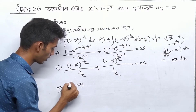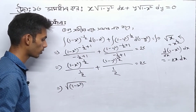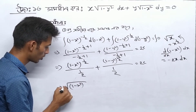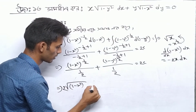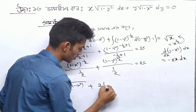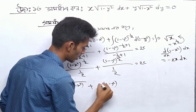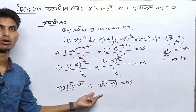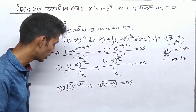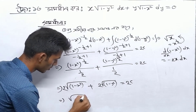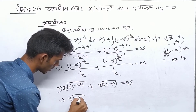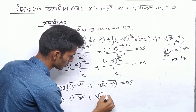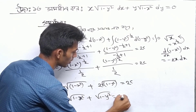I will write root over 1 minus x squared, then root over 1 minus x squared. Then with a line and a 2, and 1 minus y squared root over 2c. Then root over 1 minus x squared plus root over 1 minus y squared equals c.